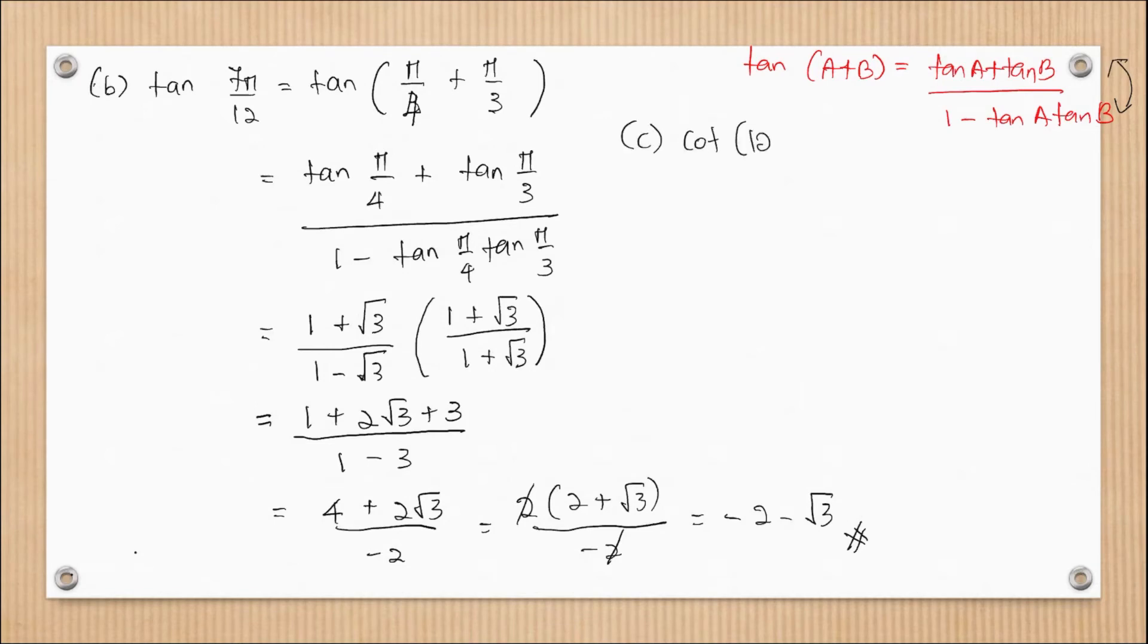All right, so for question C: cot(120° - 60°). So we cannot calculate cotangent, but we can calculate tangent. So we change that into 1/tan(120° - 60°).